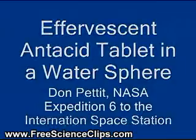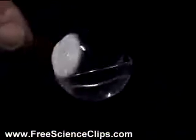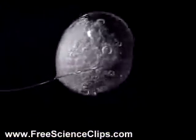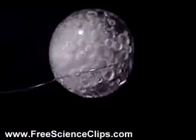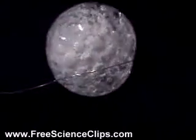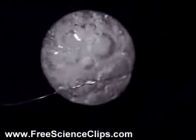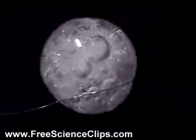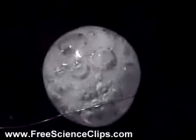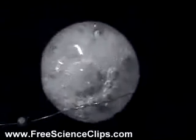Effervescent antacid tablet in a water sphere. Here's a sphere of water 50 millimeters in diameter with an effervescent antacid tablet. Bubbles form rapidly from a chemical reaction. This is an example of heterogeneous nucleation where bubbles form on a solid surface and can get a momentum exchange and travel out into the fluid.